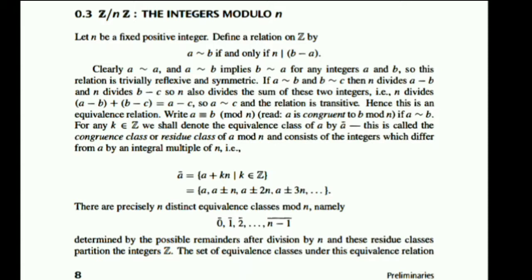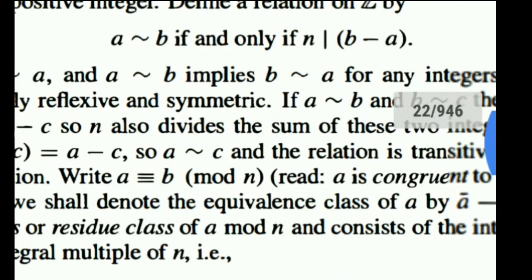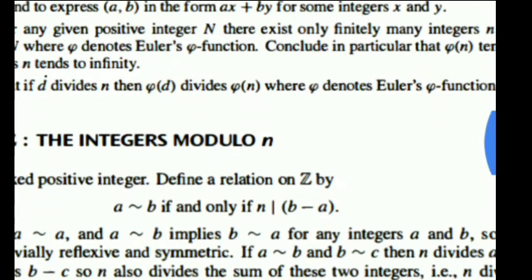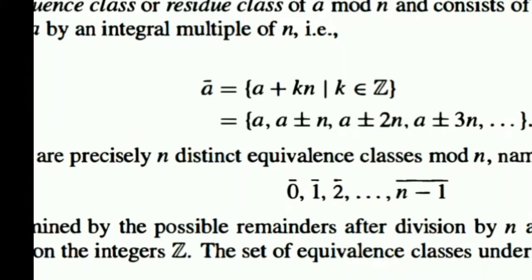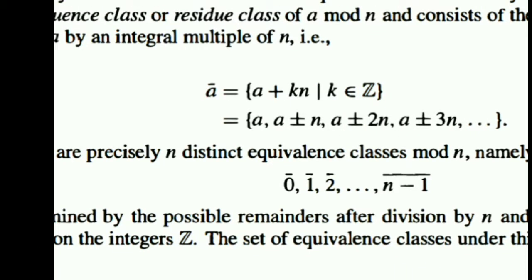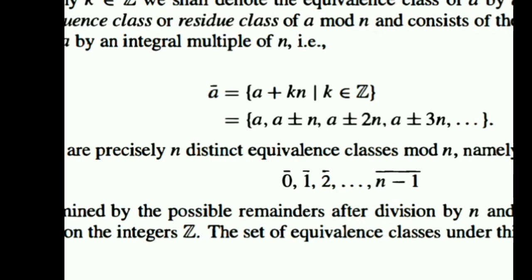Therefore this is an equivalence relation, so we can talk about the equivalence class of elements. We shall write a is congruent to b mod n. The class is basically the set a plus kn where k belongs to Z, that is the set a, a plus minus n, a plus minus 2n, and so on.